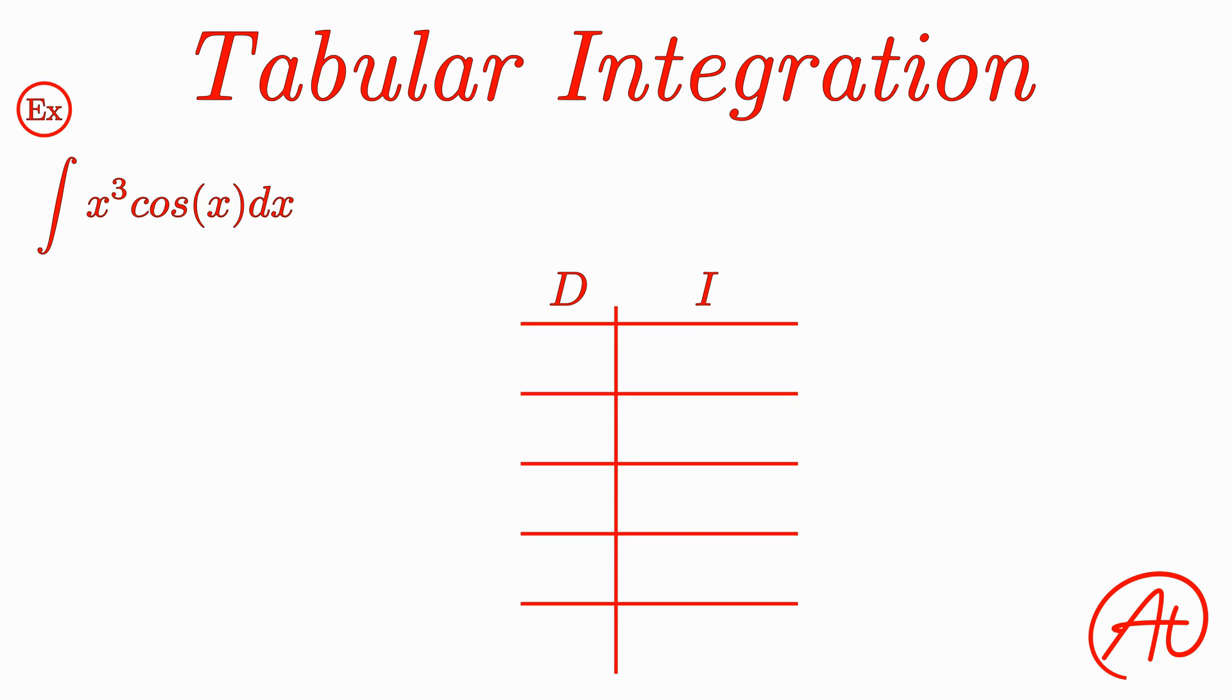Let's say we wanted to take the integral of x cubed times cosine of x. In this example, we have a term x cubed that if differentiated enough times would result in zero, and a term cosine of x that we can repeatedly take the integral of so we can use tabular integration. First, let's again just put those two functions in the table.